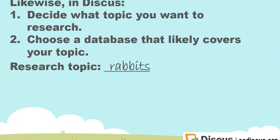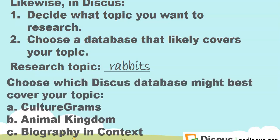In Discus, decide what topic you want to research and choose a database that likely covers your topic. For instance, if you want to learn about rabbits, which Discus database might best cover your topic? Culture Grams? Animal Kingdom? Biography and Context? That's right — Animal Kingdom. They would most likely have something about rabbits.